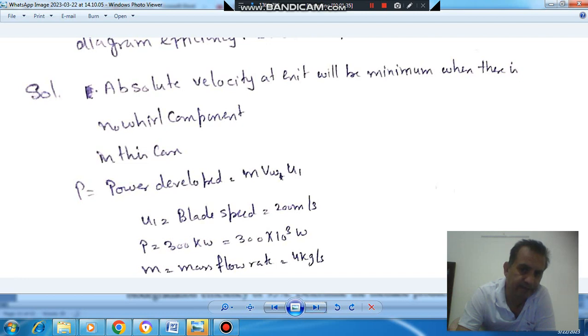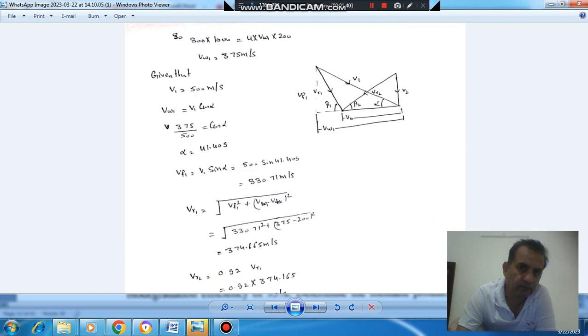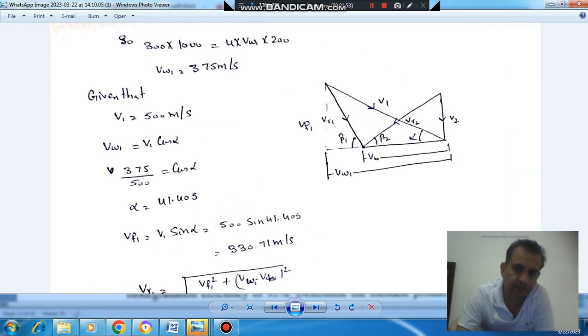From this we can find out the whirl component at inlet. So this is your whirl component at inlet VW1. That comes out as 375 m per second. So power P is M × blade speed × VW1. So VW1 is 375 m/s. So this is your compound velocity diagram.